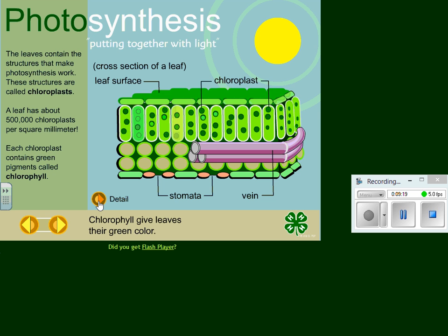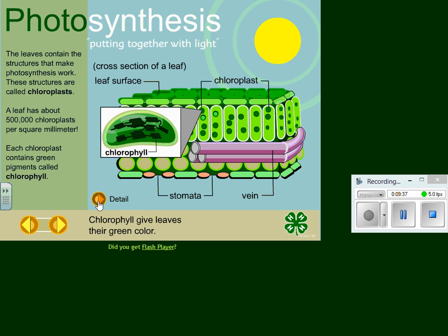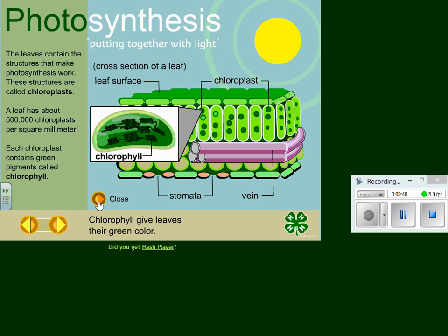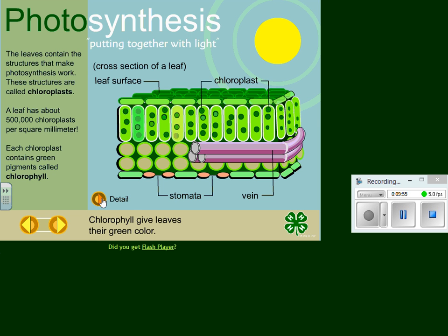What happens in the stomata? What's changing in the stomata? The carbon dioxide and the water are being changed into glucose and oxygen — abracadabra! Here it shows you where you have the chlorophyll within the chloroplast. What is the chlorophyll for? It gives the leaf its color, which is why your leaves should be colored partially green.